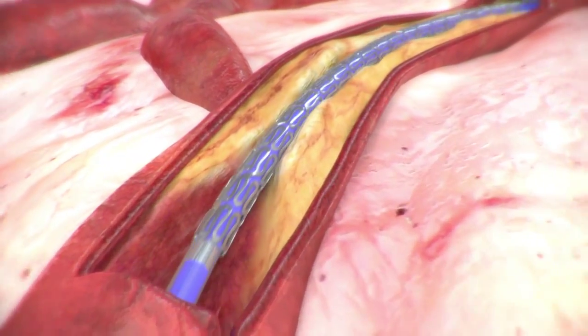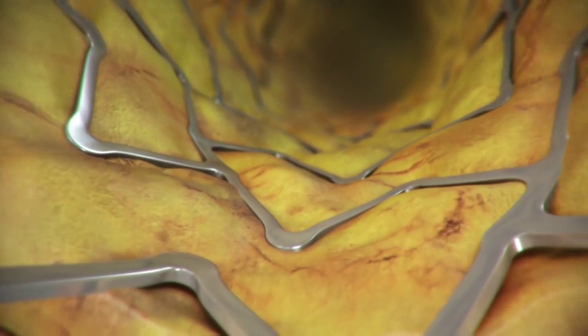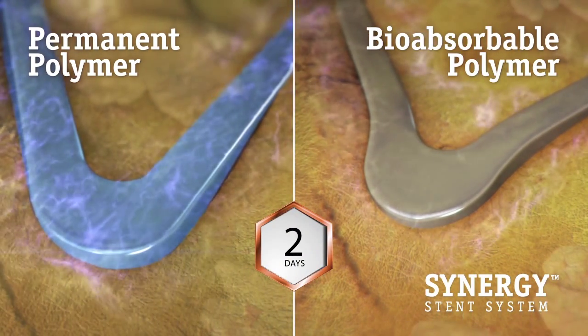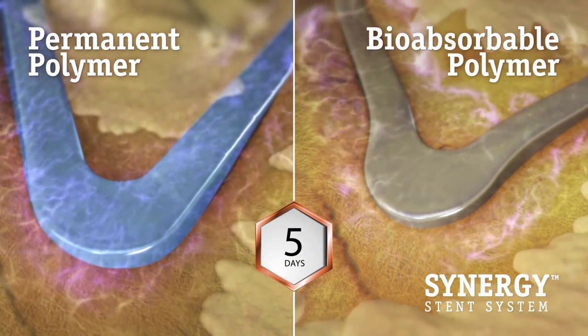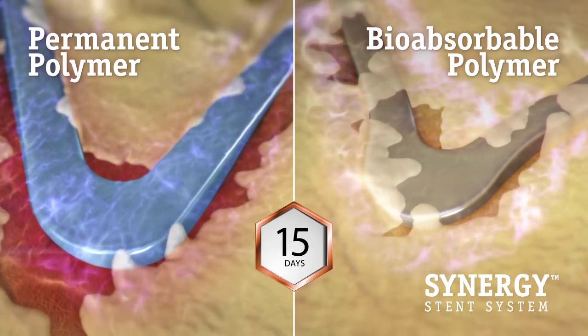The abluminal drug and polymer coating suppresses neo-entimal growth and may promote more rapid endothelialization and earlier healing, in comparison to conformally coated permanent polymer drug eluting stents which have been associated with delayed endothelialization and healing.